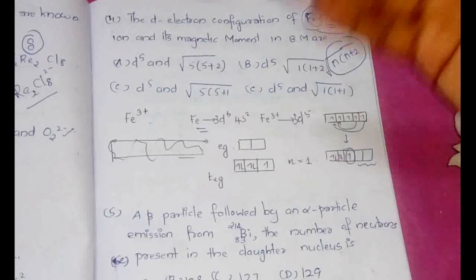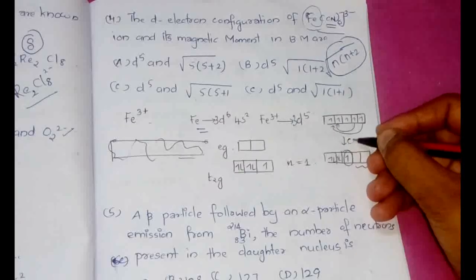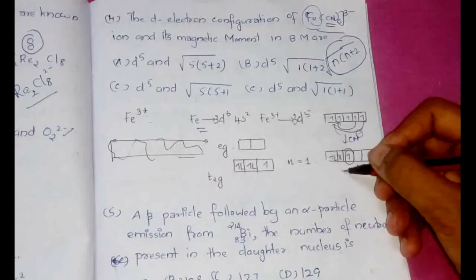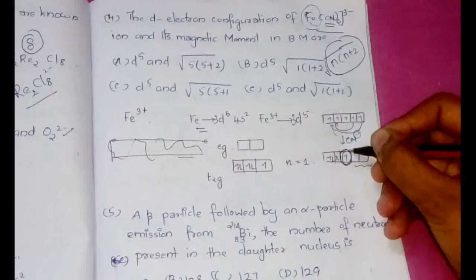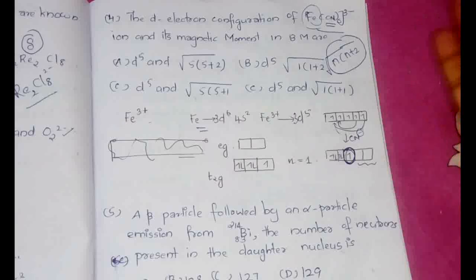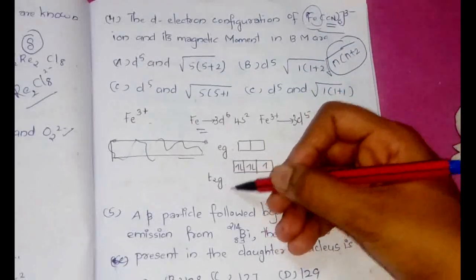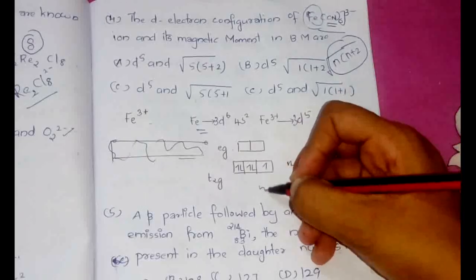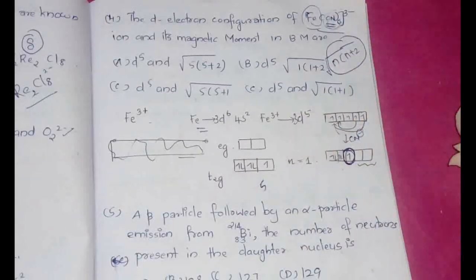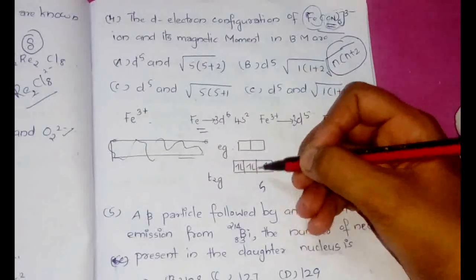So d5 can be filled as, now let's see about cyanide. Cyanide is a very strong ligand, so pairing of electrons will take place. So we can either fill it like this, then since CN- is a strong ligand, the pairing would take place and as a result we will be having one unpaired electron. Or else we can fill it like this, that is after the splitting it will be T2g5, because CN is a strong ligand.